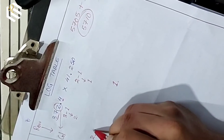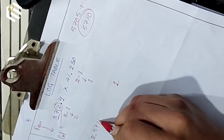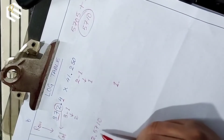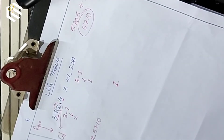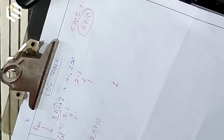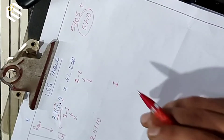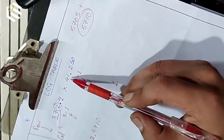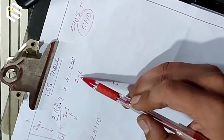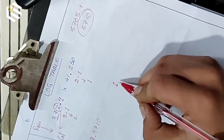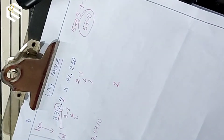Now let's see: 5, 7, 1, 0. 2, 5, 7, 1, 0. So we can say 1, 2, 1, 2, 1, 0. One point.